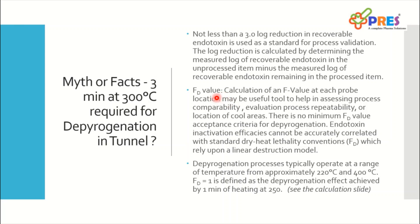FD is not directly connected with endotoxin killing. We can only compare how much FD value we achieve when we demonstrate acceptance criteria. There is no minimum FD value acceptance criteria demonstrated for the depyrogenation process. Endotoxin inactivation efficiencies cannot be accurately correlated with standard dry heat lethality conventions (FD), which rely upon linear destruction. With thermal parameters, you cannot make a direct correlation with endotoxin inactivation — both run in different kinetics.